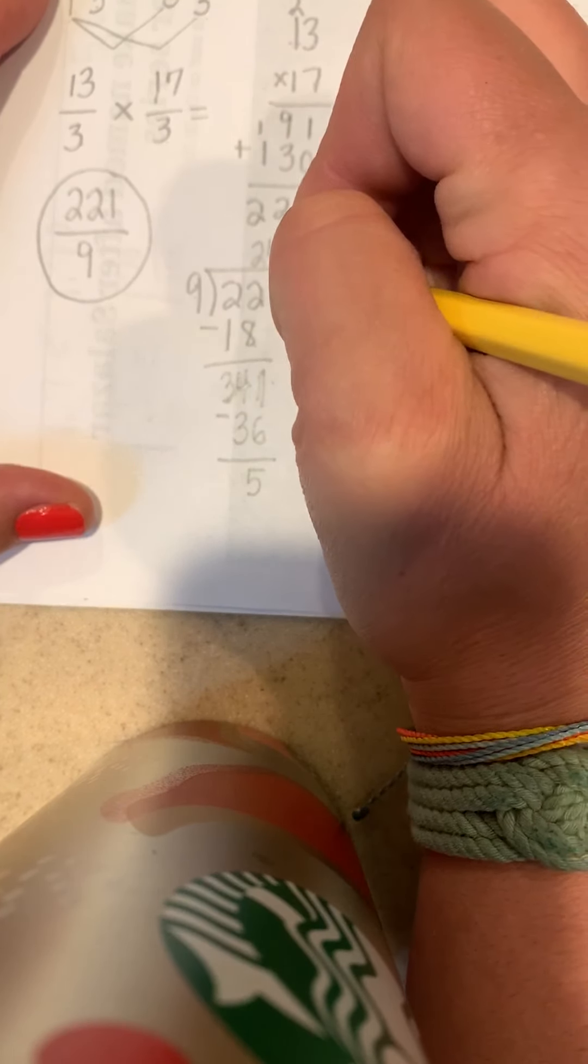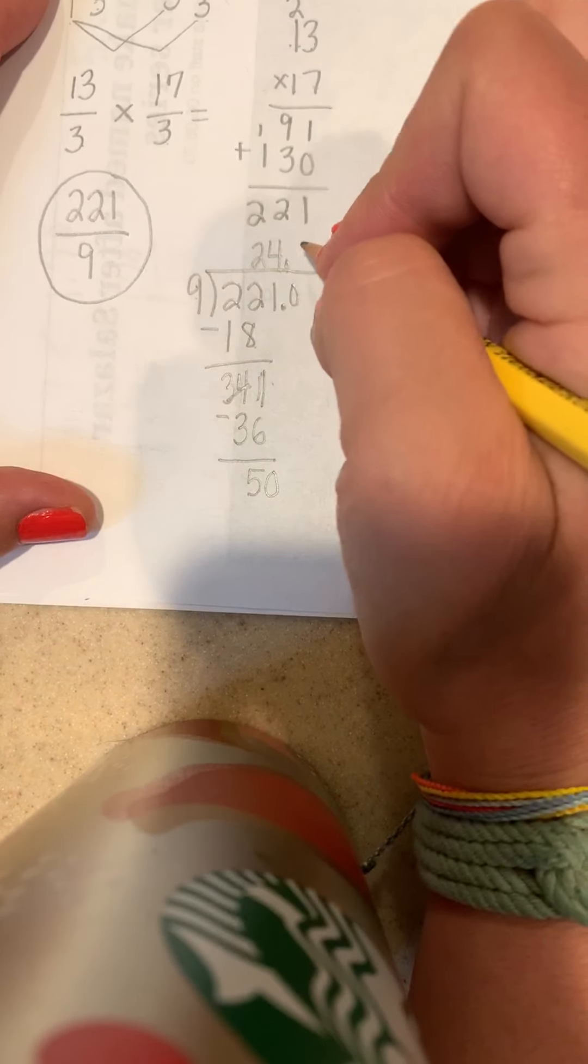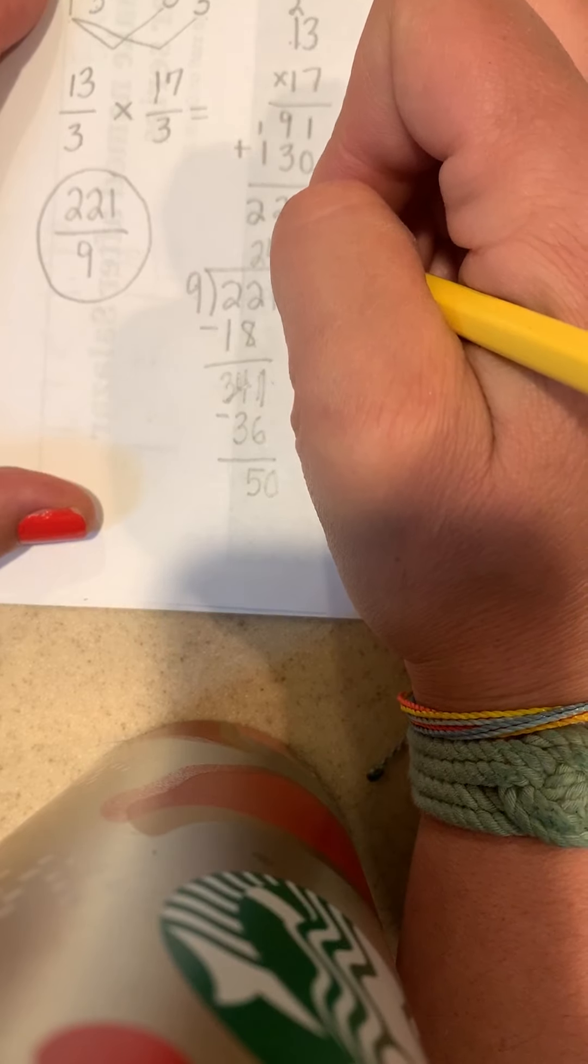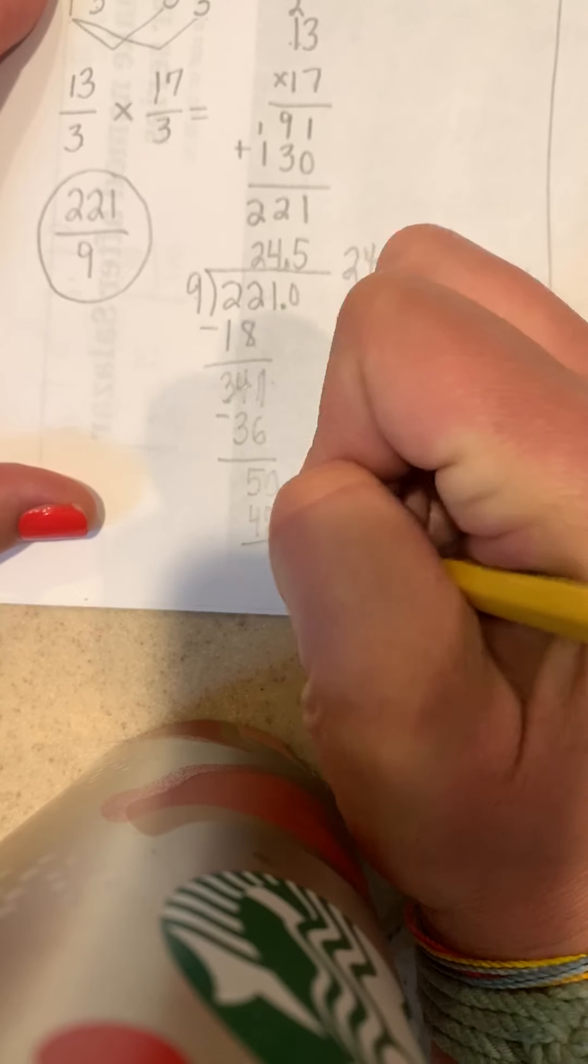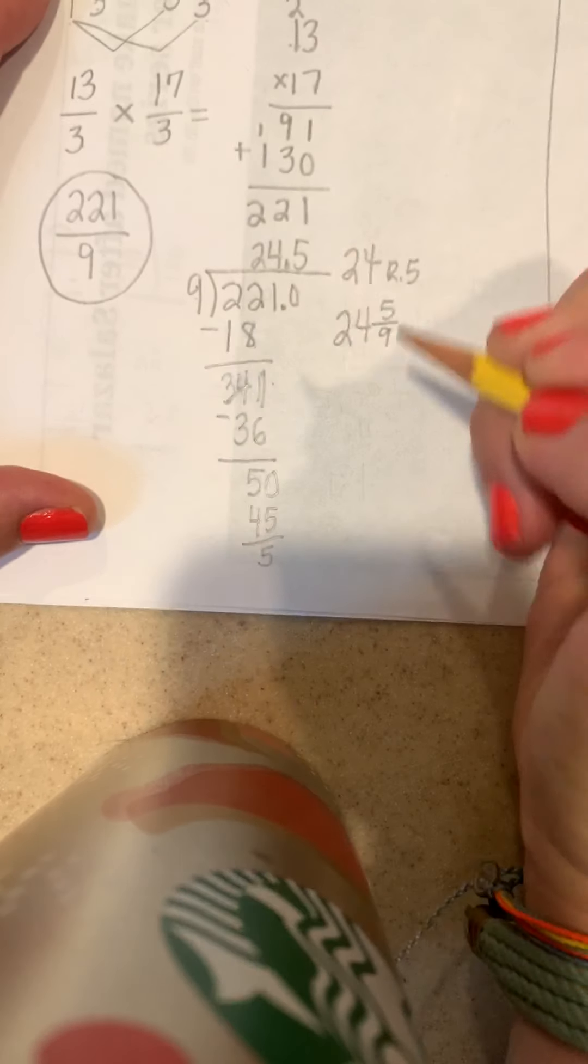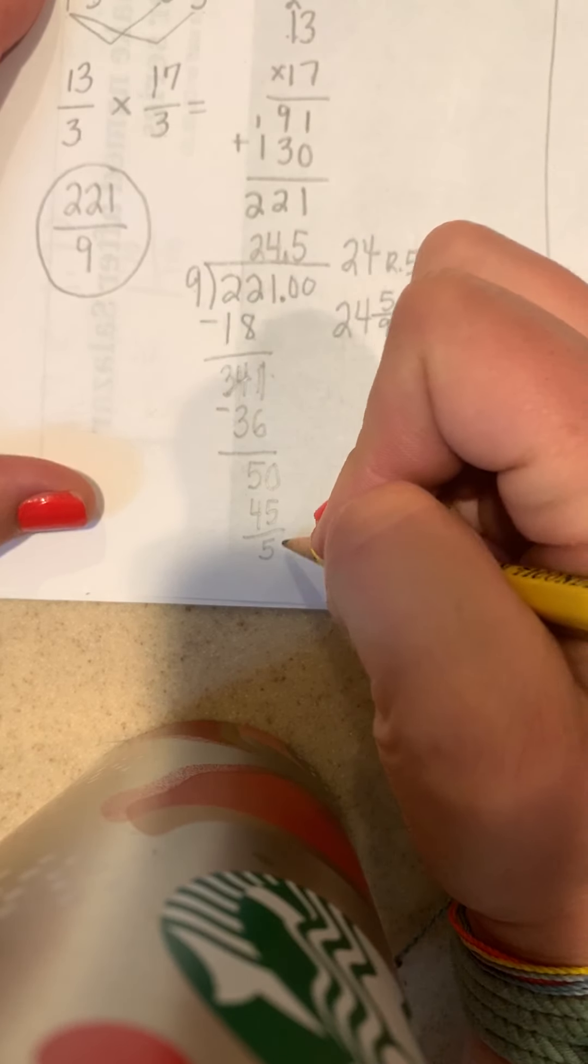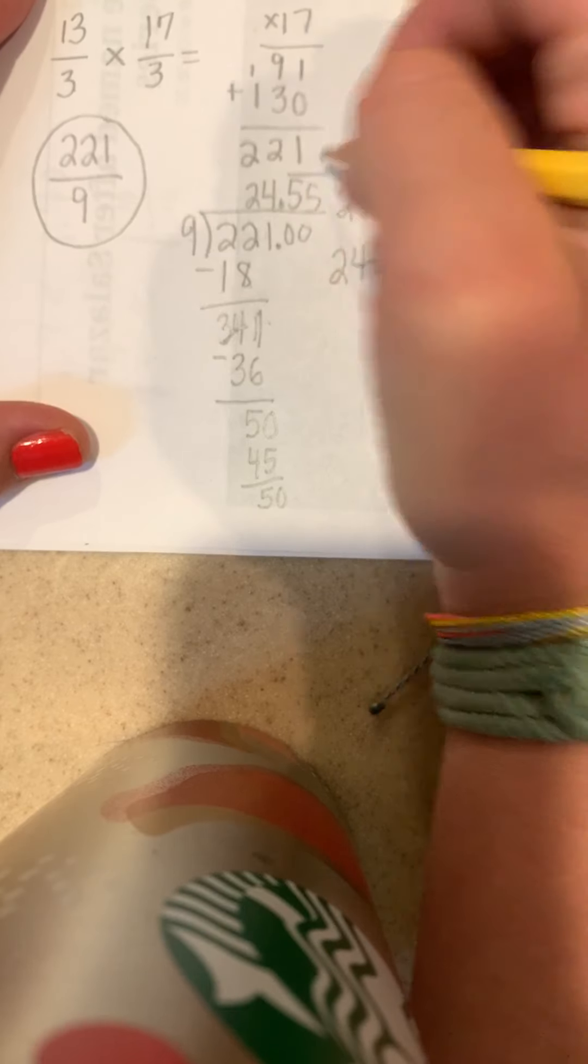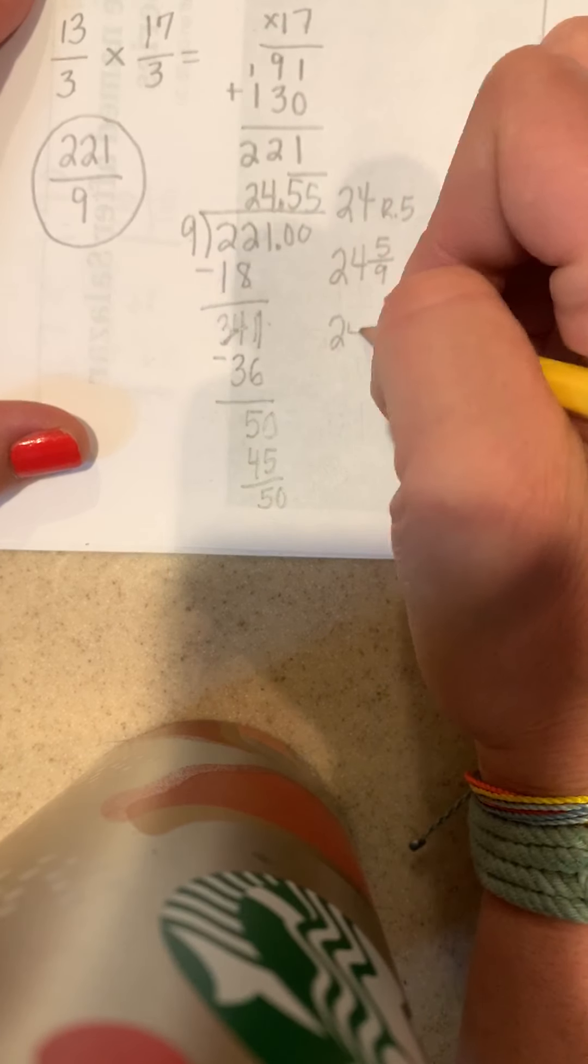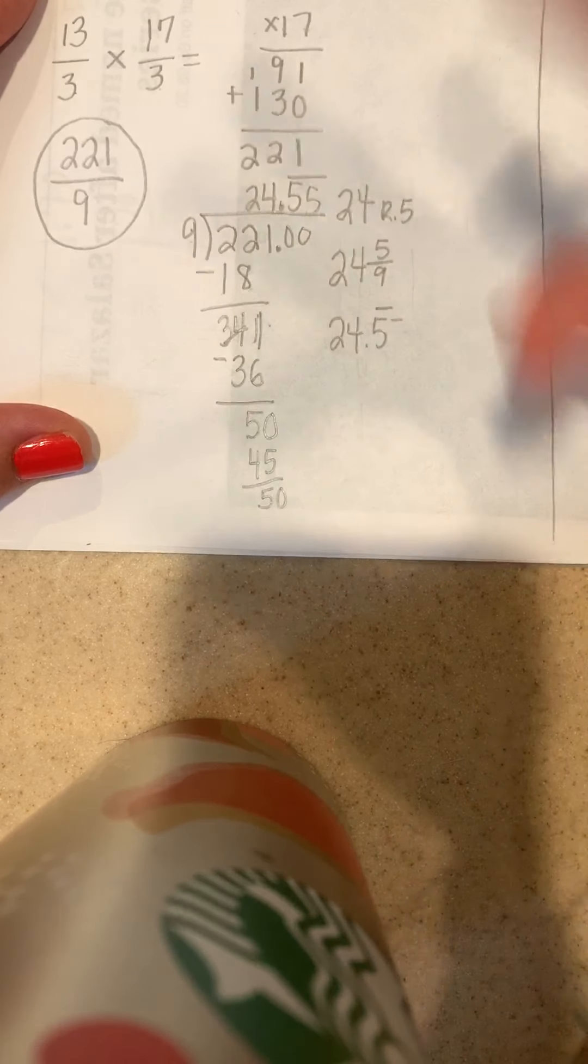Or if you really wanted to show off what you can do, you could continue the decimal. So let's see, that's 9 into 50 is 5 whole times, that's 45. Oh no, I'm running out of room. Oh good, I'm getting a repeat. So you could also say your answer is 24 with 5 repeated.